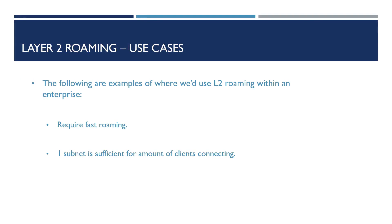Now that we understand the different types of roaming that can take place, let's take a look at some use cases for Layer 2 and Layer 3 roaming. Layer 2 roaming can be beneficial if we require fast roaming — for example, applications that are time-sensitive like VoIP. In addition to this, a use case where we only have requirements that fit a single subnet with a small number of clients connecting can suffice with Layer 2 roaming.